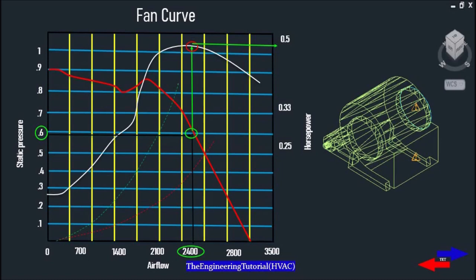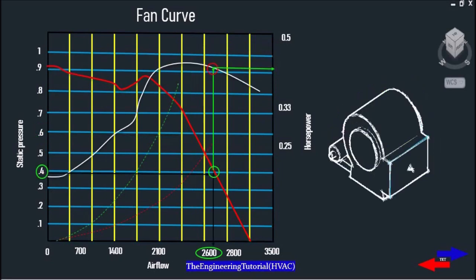So in this case, the intersection of the system curve and the fan curve is going to be higher and higher. As you can see, here is another example. We have a fan operating at less pressure